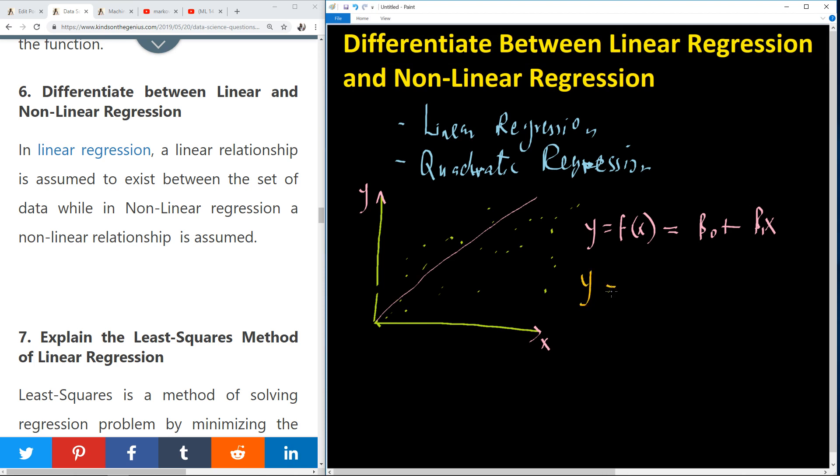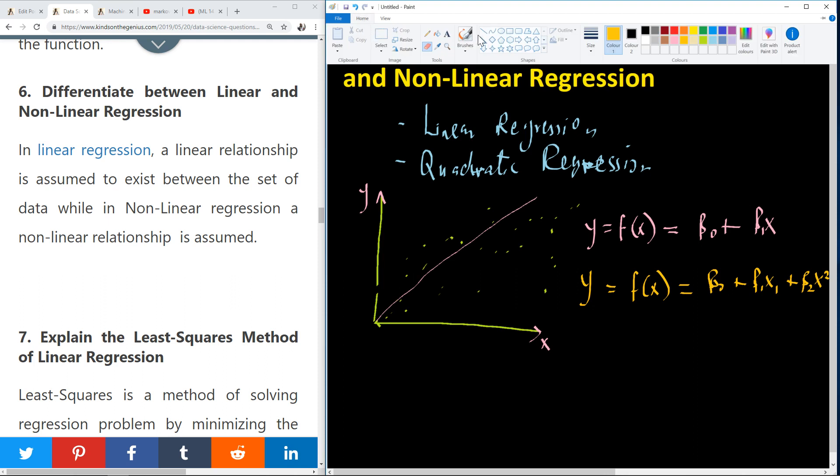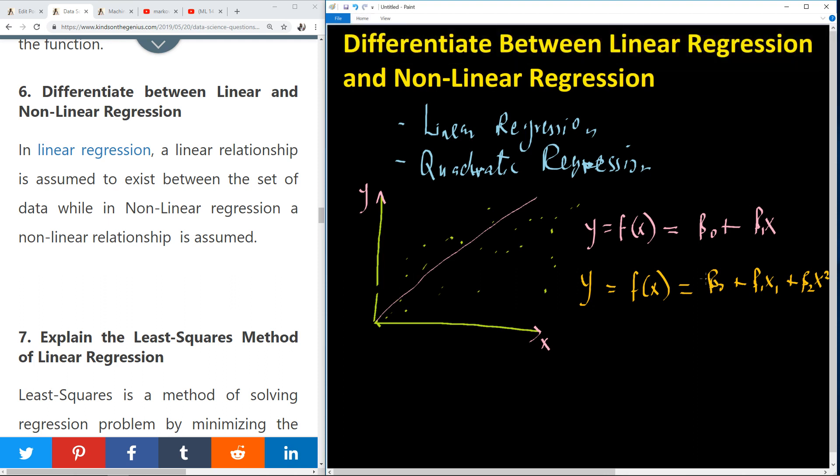So we can have something like y equals f of x equals beta 0 plus beta 1 x plus beta 2 x squared.